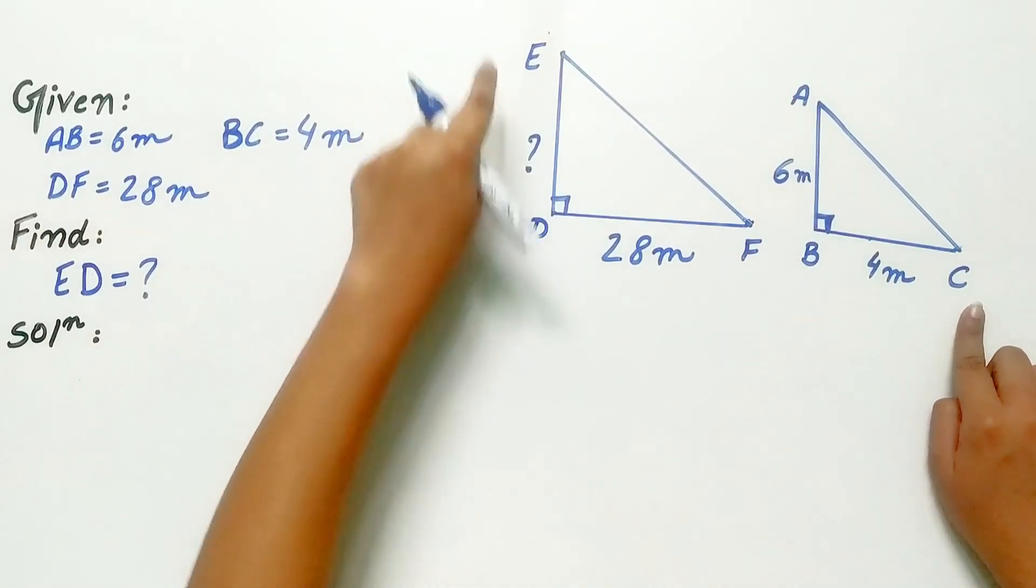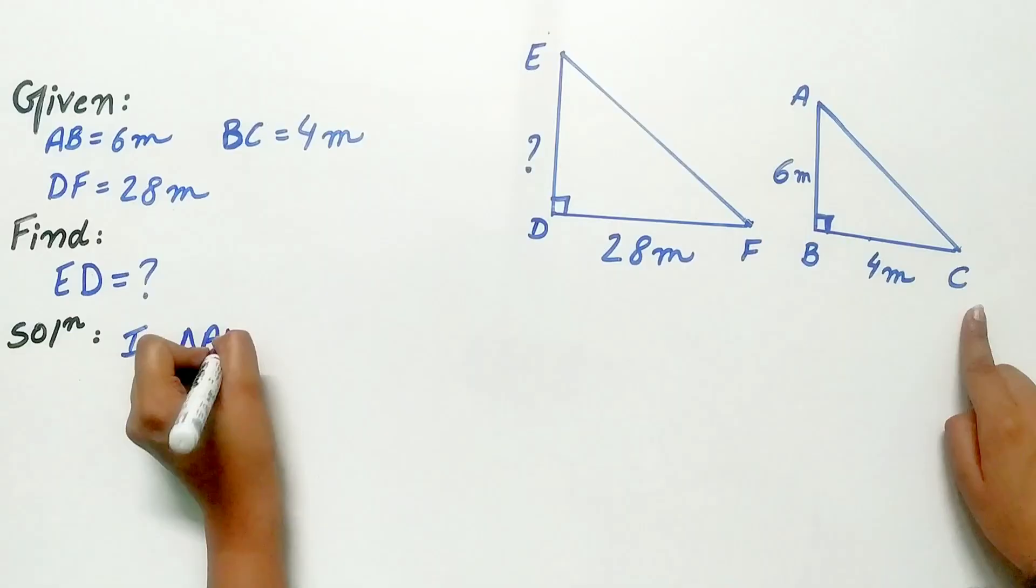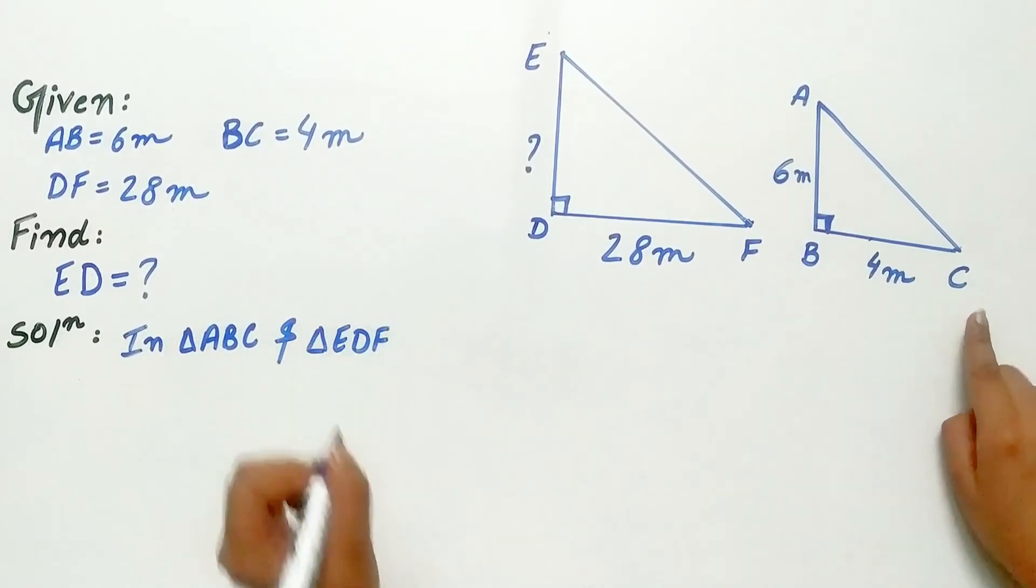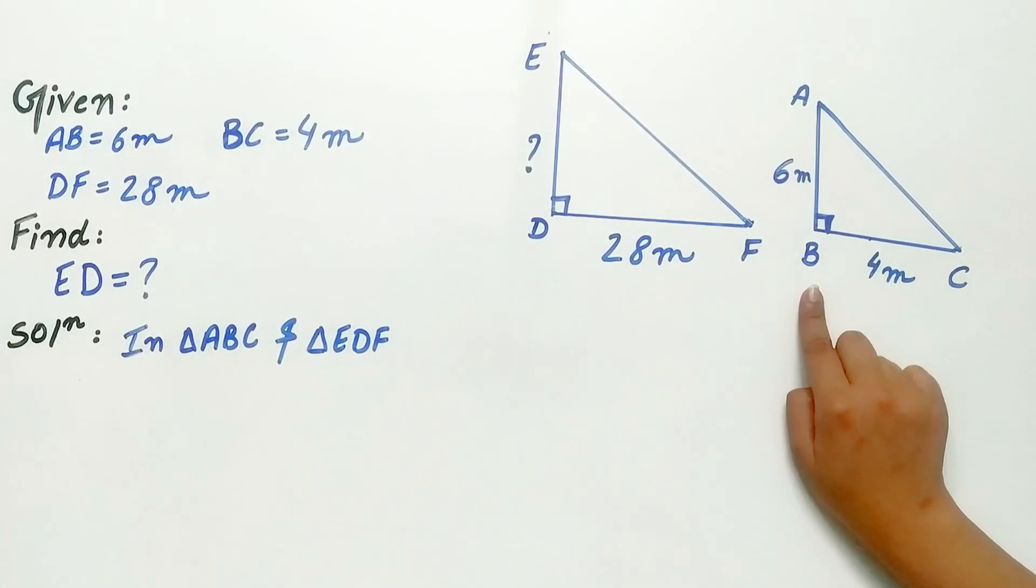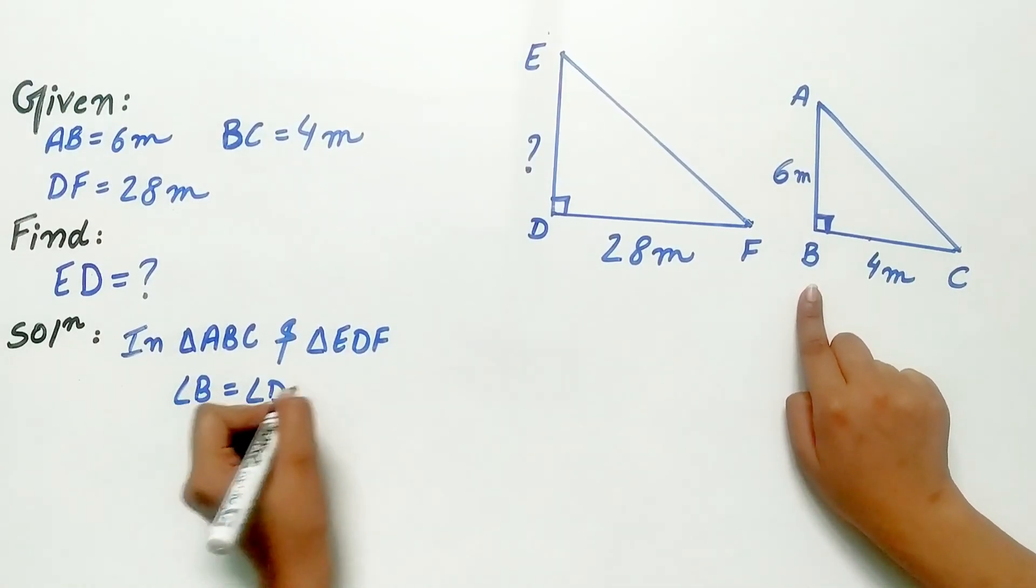In triangle ABC and triangle EDF, angle D is equal to angle B. Why? Because they are both 90 degrees.